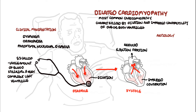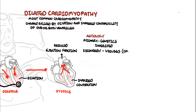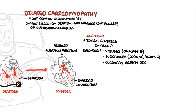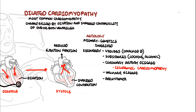Dilated cardiomyopathy can be a primary condition — as in genetic or inherited causes — or it can be secondary to something else, such as a viral infection (specifically Coxsackie B virus), substance abuse such as alcohol and cocaine, or coronary artery disease. Coronary artery disease causing cardiomyopathy is sometimes called ischemic cardiomyopathy. Other causes include valvular diseases, causing valvular cardiomyopathy, as well as arrhythmias.